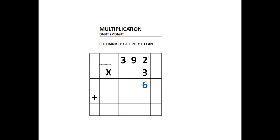In our first multiplication, 3 times 2 is 6. The 6 is in the column where the 2 is in the 392. 3 times 9 is 27.